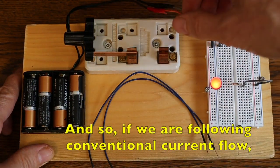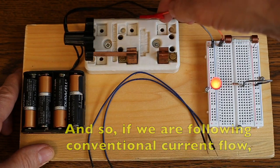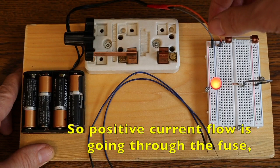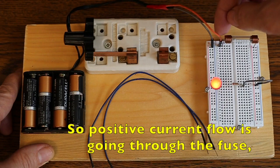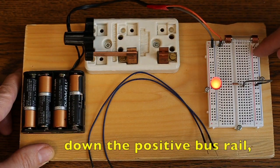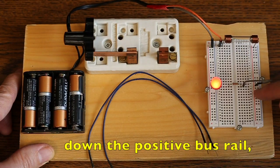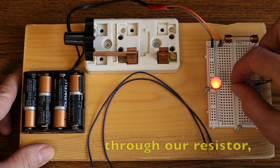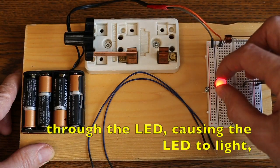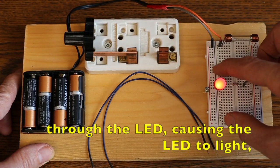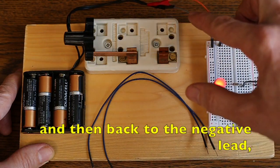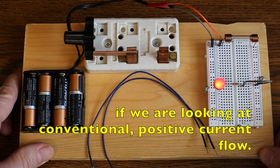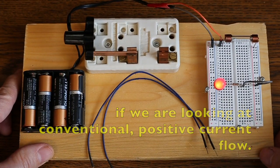And so, if we're following conventional current flow, my positive lead is connected here. So positive current flow is going through the fuse, down the positive bus rail, through the gray wire, through our resistor, through the LED, causing the LED to light. And then back to the negative lead, if we're looking at conventional positive current flow.